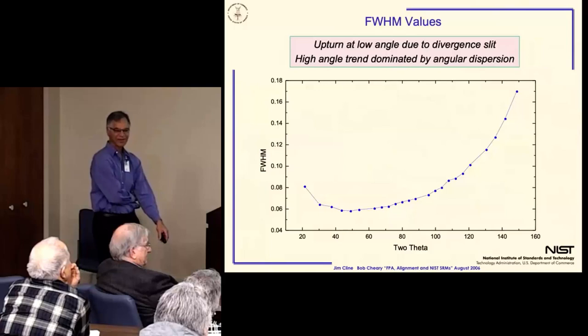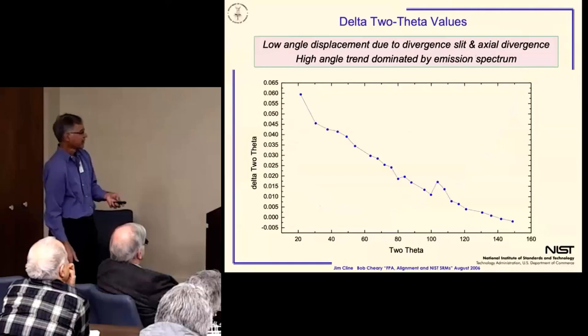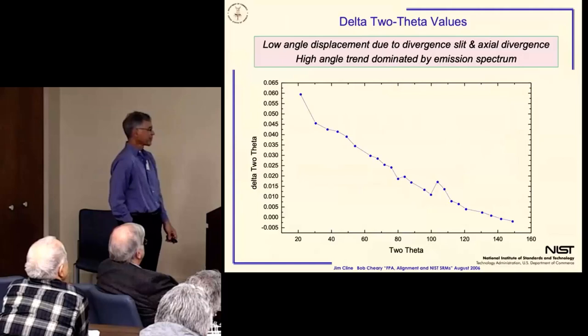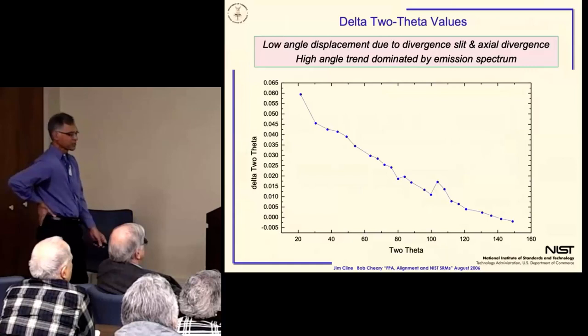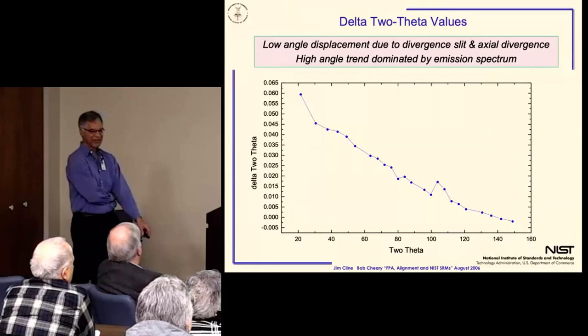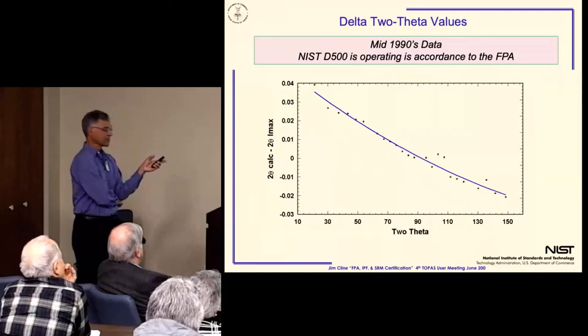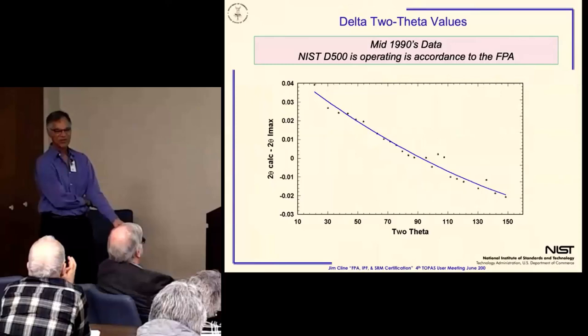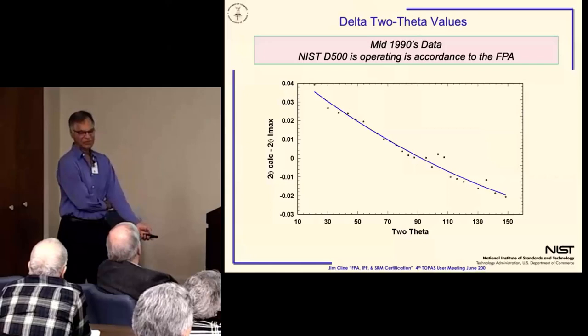If you use a more high-resolution setting, the upturn at low angle will go away. So this is the delta 2 theta where you plot the observed angle minus the certified one. And again, this can be explained quantitatively. The low angle displacement towards low angle is due to the flat specimen error and axial divergence, whereas the high angle is due to the angular dispersion and also the axial divergence. So this plot here is mid-1990s data that was successfully duplicated with simulations in XFIT. This allowed us to assert that the machine was indeed fully rationalized and we now knew we had it.